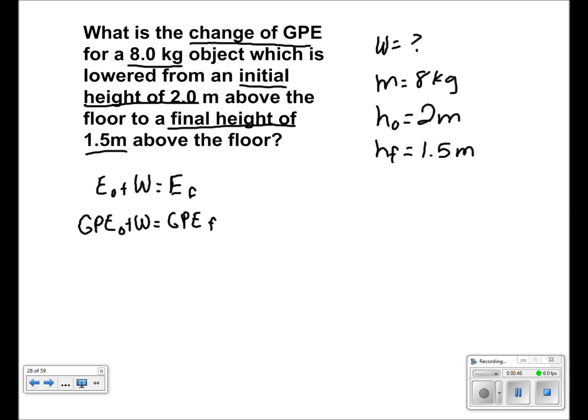Subtracting both sides by initial gravitational potential energy, we get that work is equal to final gravitational potential energy minus initial gravitational potential energy. Putting in mgh for GPE, we get that work is equal to mgh final minus mgh initial.